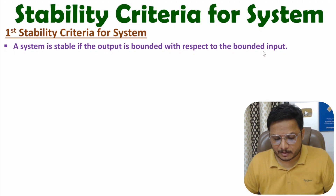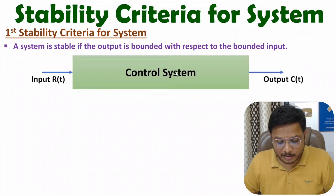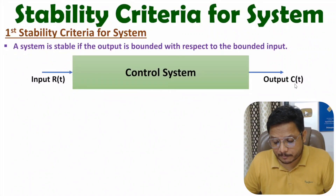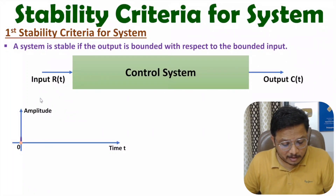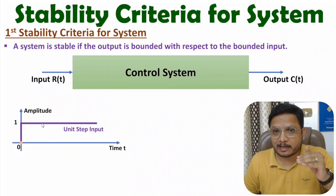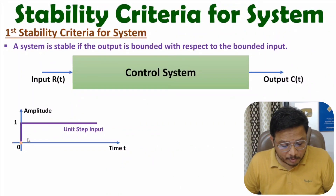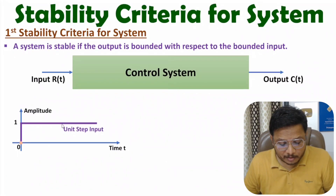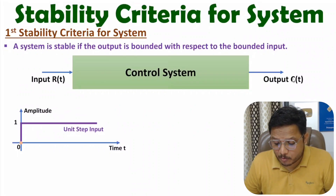Let me explain that by one example. Here we have a control system where the input is r(t) and the output is c(t). Let us apply a unit step input signal. This input signal is a bounded input signal — bounded means there is an upper limit; this input signal cannot go beyond one. This control system will be stable if it is producing bounded output.